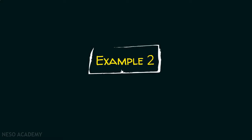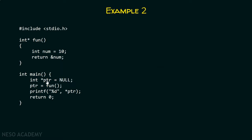Now let's consider example number two. Here in this case, you can clearly see I have a function called fun and a main function. Within the main function, we have a PTR pointer initialized with null — this is the best practice. PTR is a pointer and right now it is not pointing to any object, so it is better to initialize it with null. After that, we are calling the function fun and storing the address returned by it in PTR. Within the fun function, we have a variable num initialized with value 10, and we are trying to return the address of this num variable.